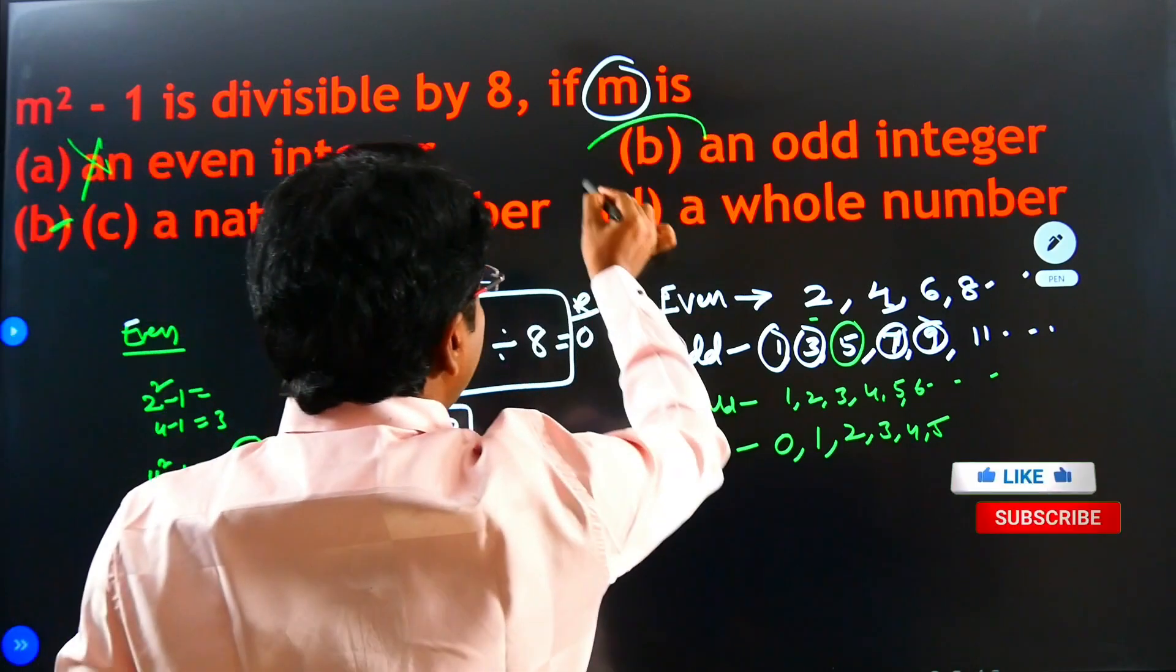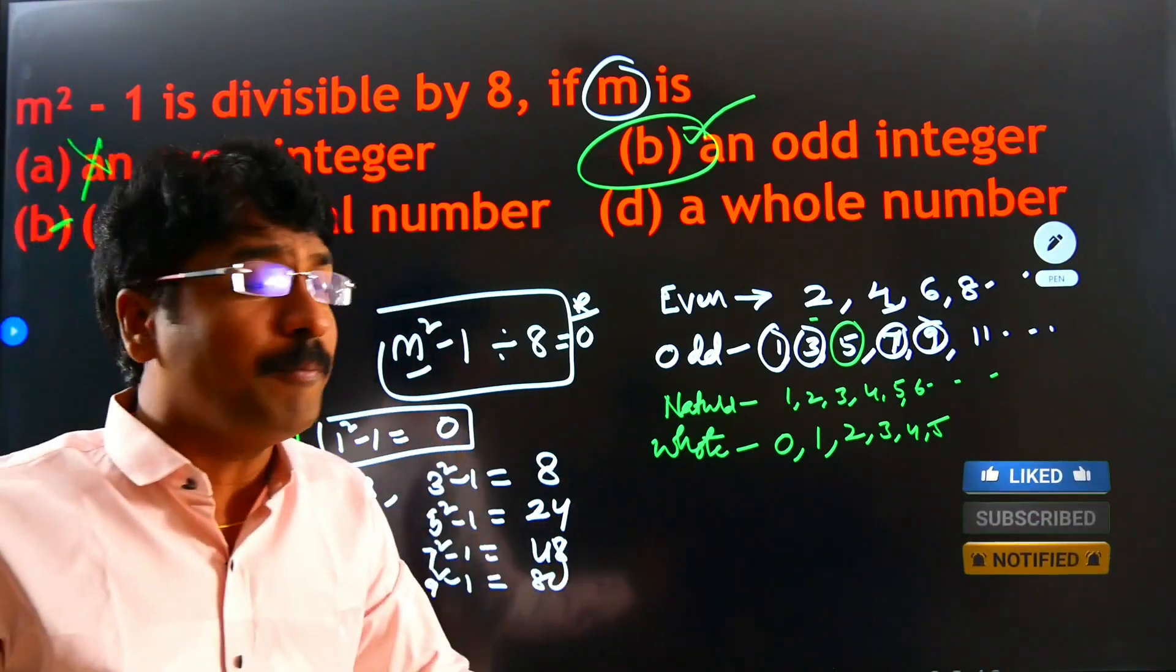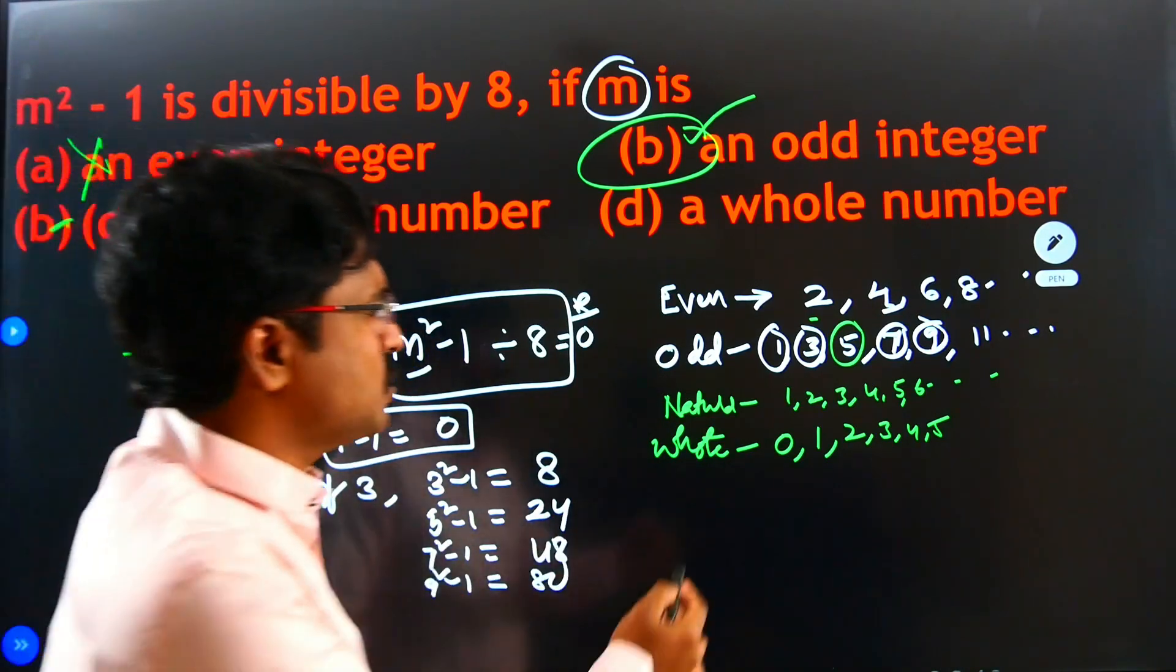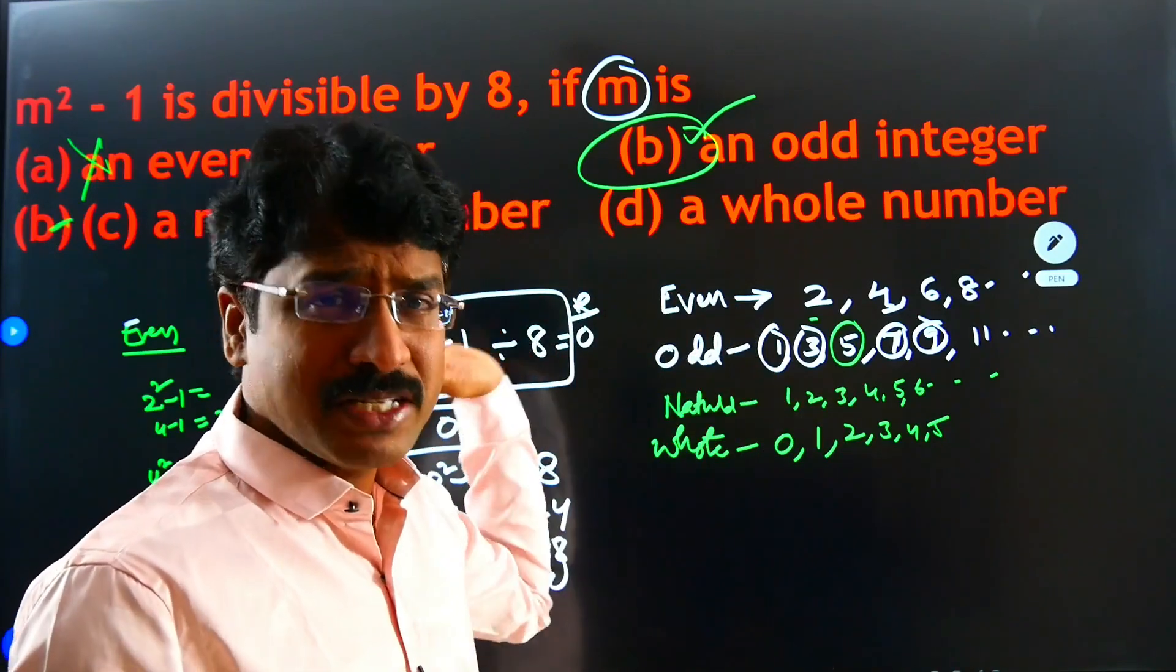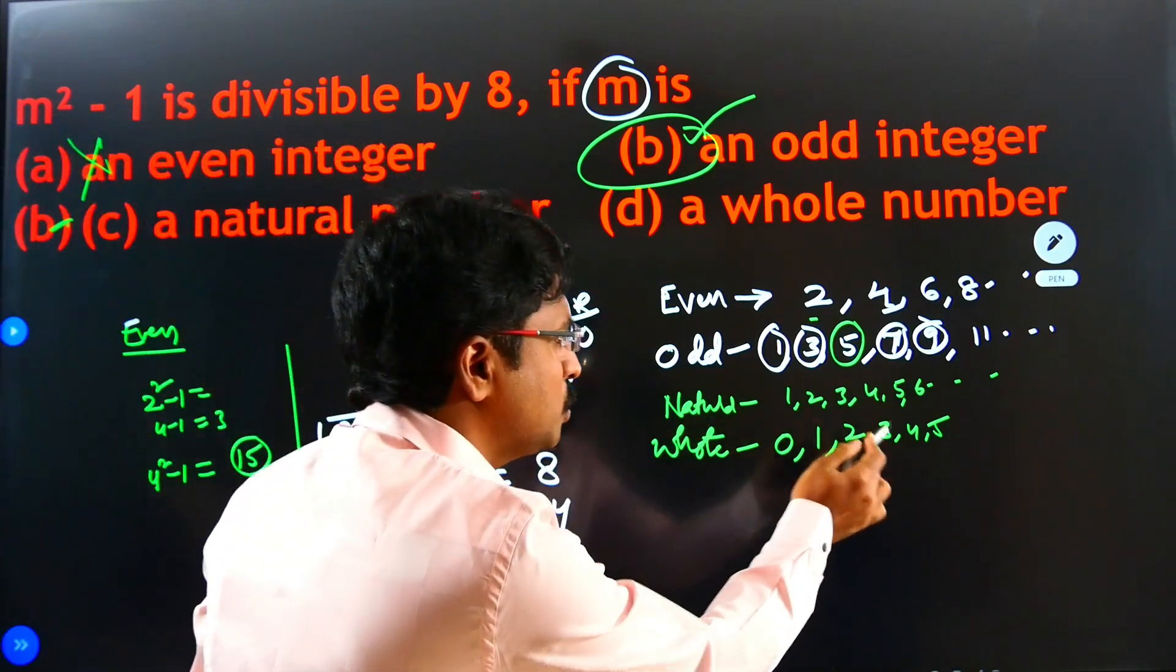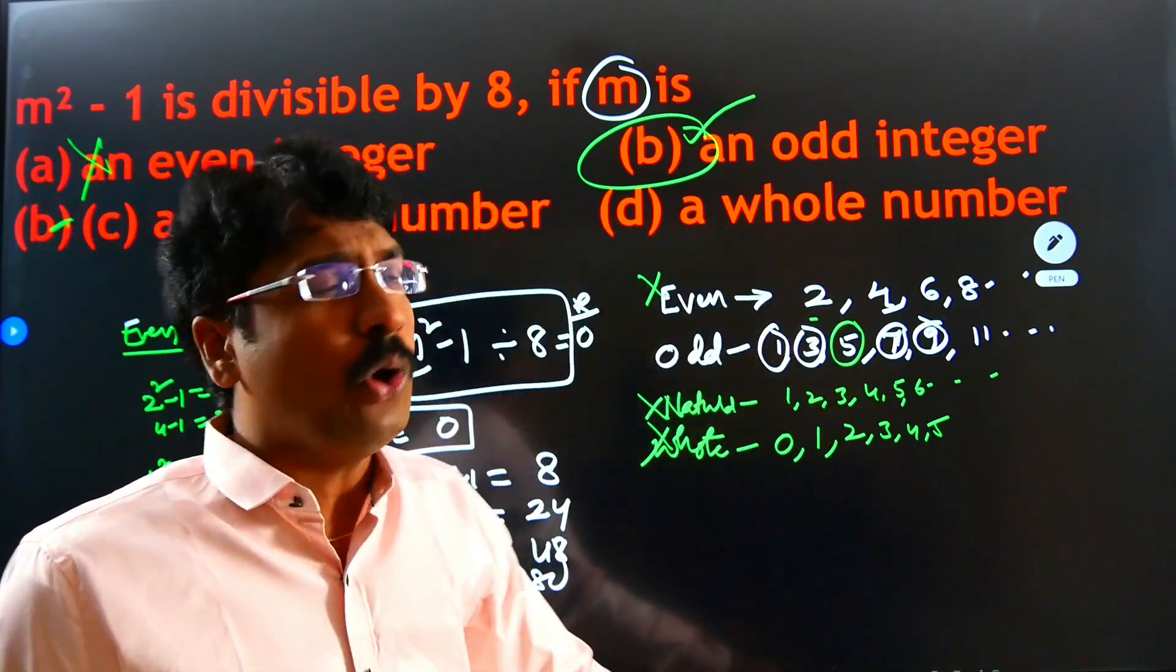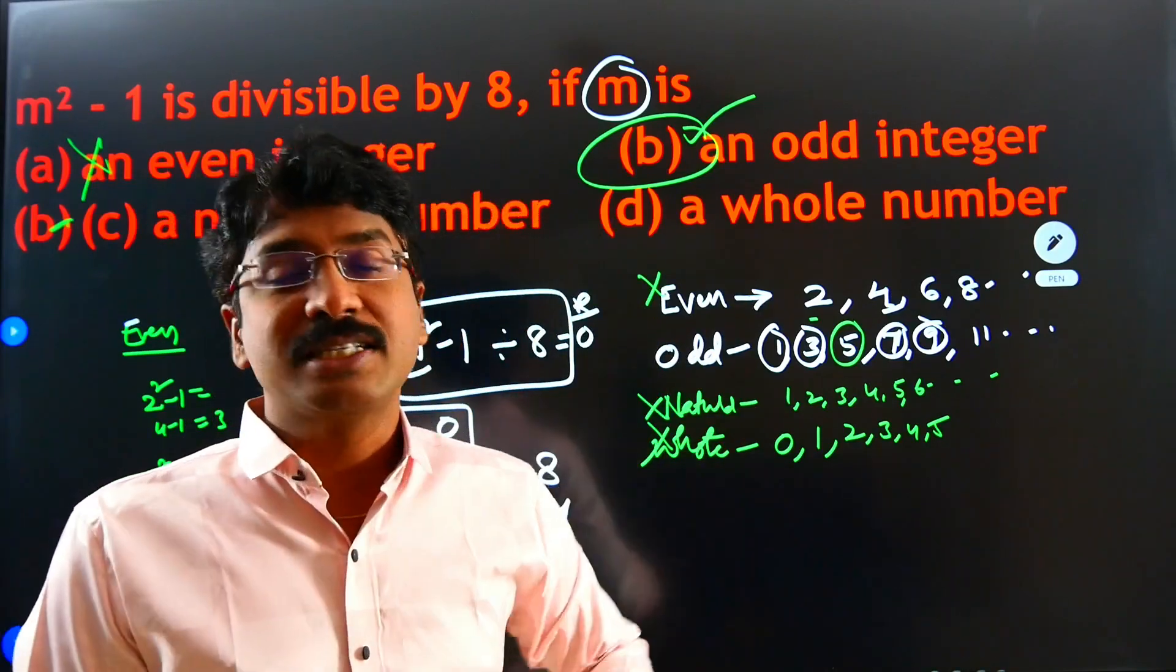That means option B is correct. Why? Because if you keep an odd number in the place of M, exactly the equation is possible. Option C is not possible because natural numbers 1, 2, 3, odd numbers and even numbers are there. In the even numbers, it is not possible. So, option C is not correct. Option D also not correct because 0, 1, 2, 3, 4 is also not applicable. Even numbers also not applicable. When the M is an odd number, then only this equation will be applicable. See how the sum is beautiful.